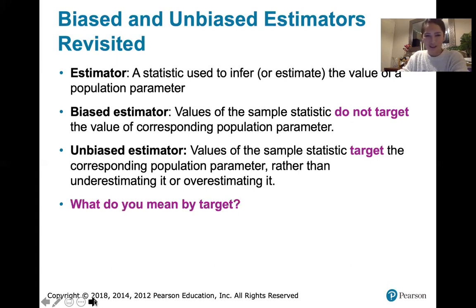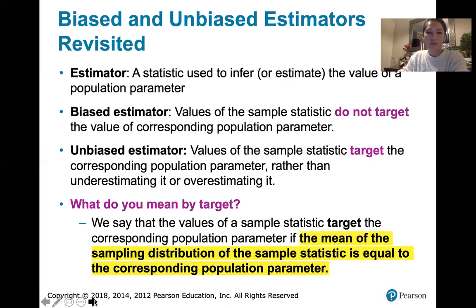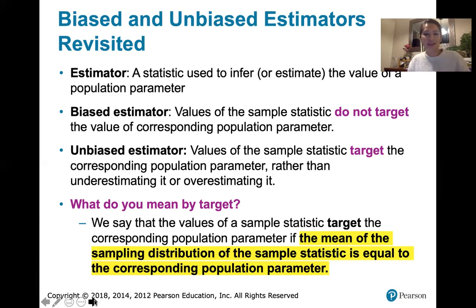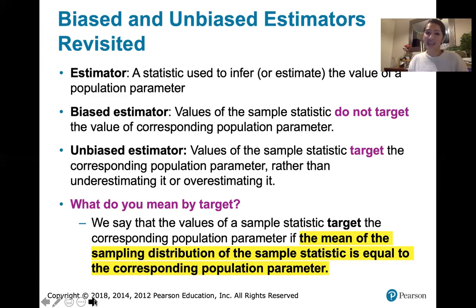If you were thinking back in Chapter 3, what do we mean by target? This is what we mean: when we say that the values of the sample statistic target the corresponding population parameter, we mean that the mean of the sampling distribution of the sample statistic is equal to the corresponding population parameter. We talked about these ideas qualitatively back in Chapter 3 before we knew about sampling distributions. Now we're able to compute the mean of a sampling distribution and say that if that mean equals the population parameter we're trying to estimate, that sample statistic is an unbiased estimator. If that mean is not equal, we call that a biased estimator.